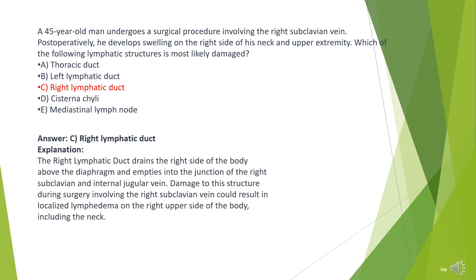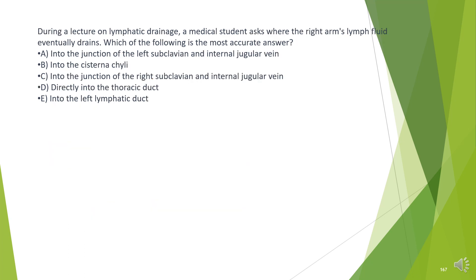The answer is C. Right lymphatic duct. The right lymphatic duct drains the right side of the body above the diaphragm and empties into the junction of the right subclavian and internal jugular vein. Damage to this structure during surgery involving the right subclavian vein could result in localized lymphedema on the right upper side of the body, including the neck.